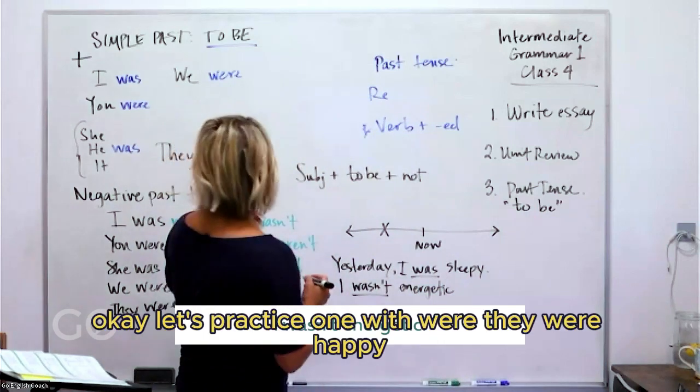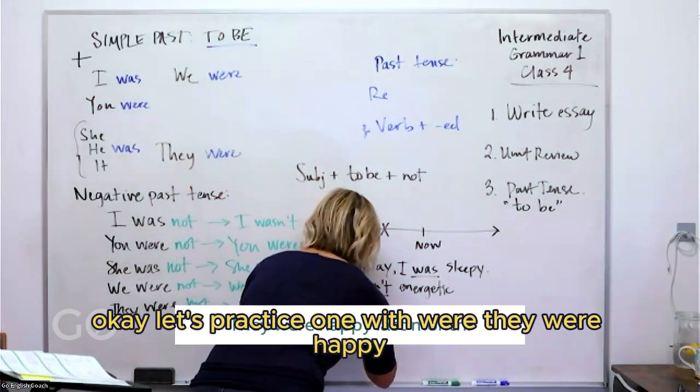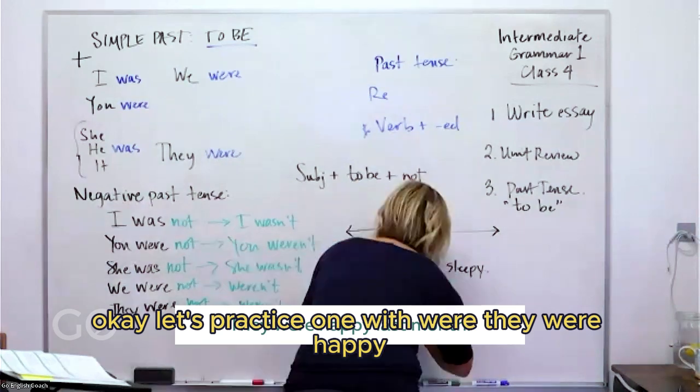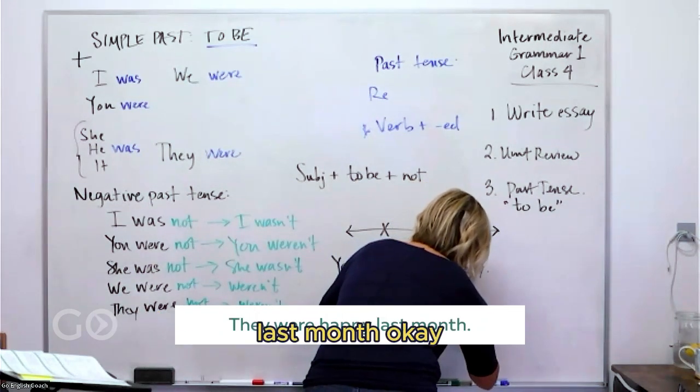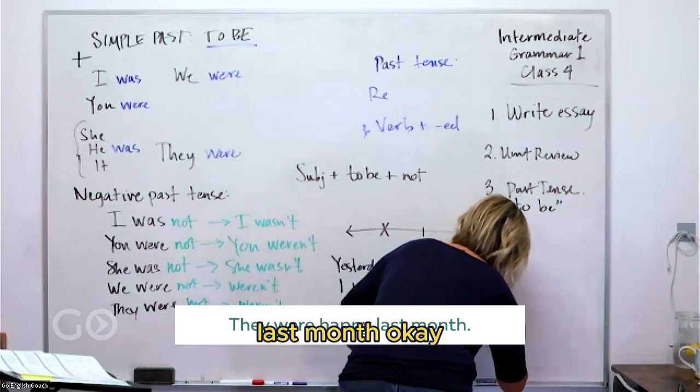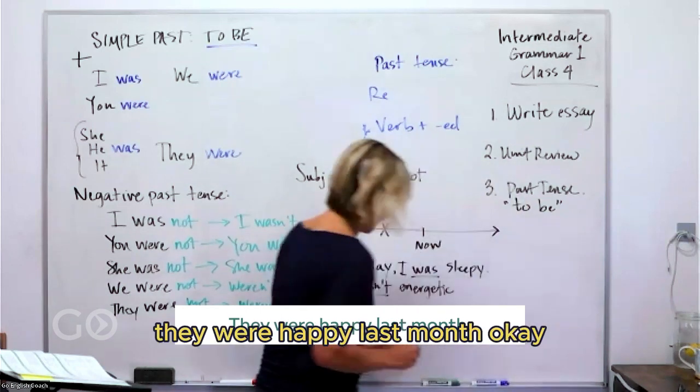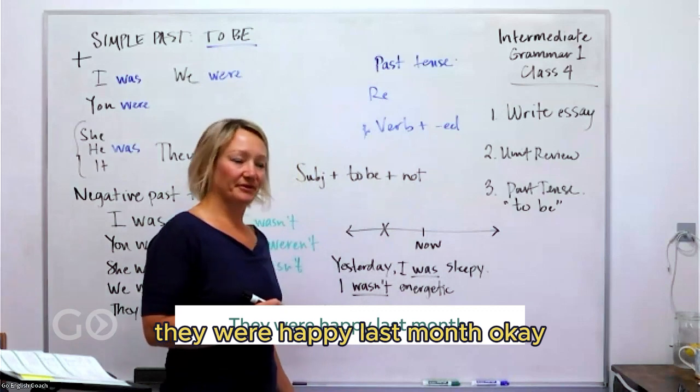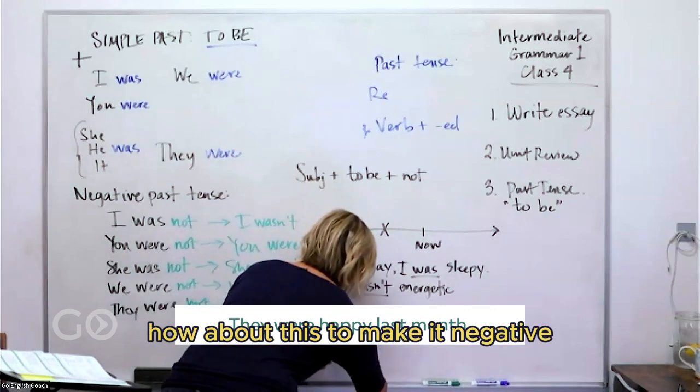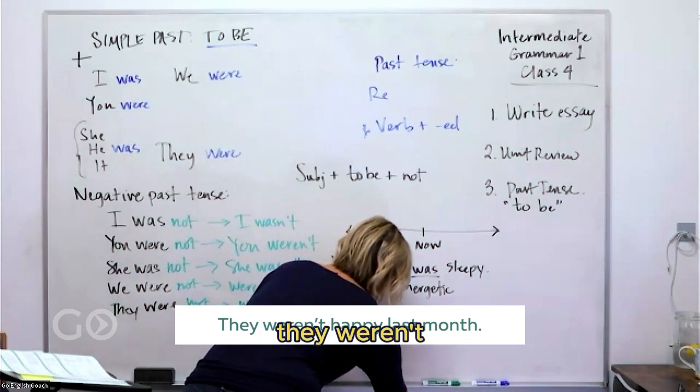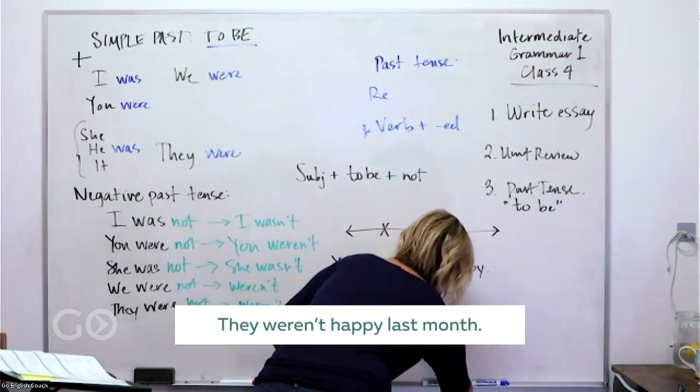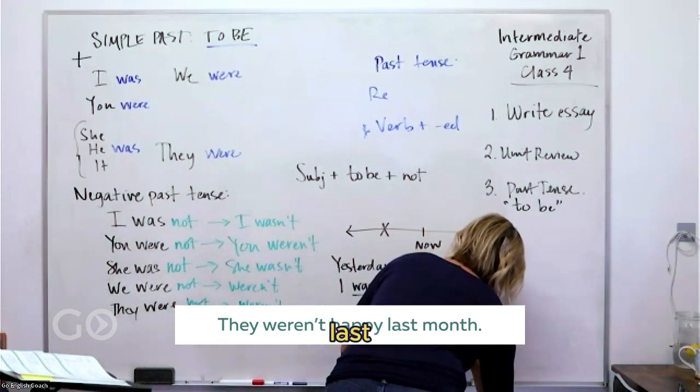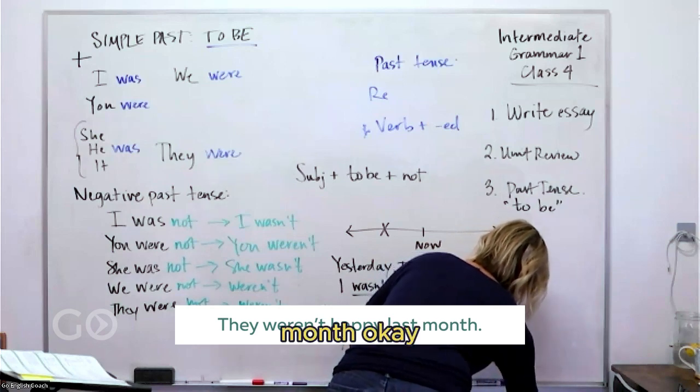Let's practice one with 'were': They were happy last month. They were happy last month. How about this to make it negative? They weren't happy last month.